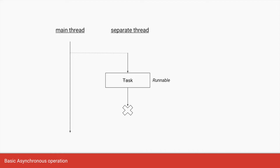In Java, to perform a non-blocking operation has always been easy. You simply create a new Runnable, run it in a separate thread, and once that Runnable calls the run method and the run method is completed, that thread is destroyed. If the task that you want to run is also returning a value back, you could use something called Callable.